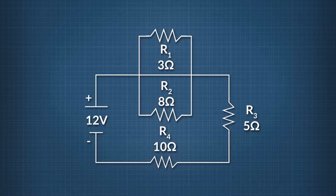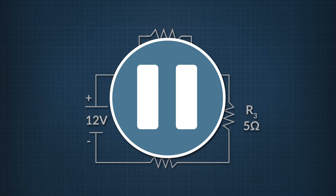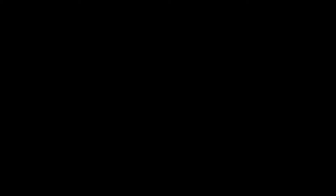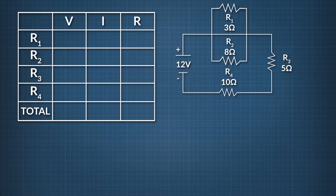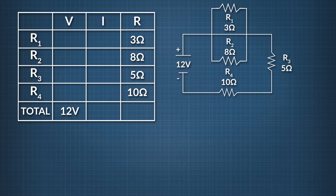Now we can move on to solving a complex circuit — a combination of series and parallel. Looking at this circuit, you can see there's a parallel piece as well as a series aspect. We'll solve for current, voltage, and resistance step by step using a VIR chart to organize all our information. A VIR chart includes one column for voltage, current, and resistance, a row for each resistor, and one last row for the total V, I, and R. The first thing we do is fill in all the given information — in this case, all resistance values and the total voltage.